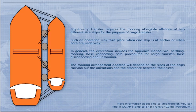Ship-to-ship transfer requires the mooring alongside offshore of two different-sized ships for the purpose of cargo transfer. Such an operation may take place when one ship is at anchor or when both are underway. In general, the operation includes the approach, maneuvering, berthing, mooring, hose connecting, safe procedure for cargo transfer, hose disconnecting, and unmooring. The mooring arrangement adopted will depend on the sizes of the ships carrying out the operation and the difference between their sizes.